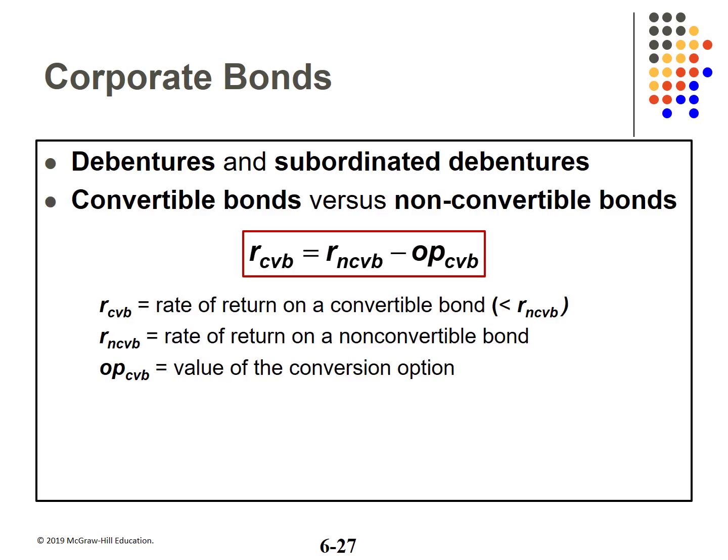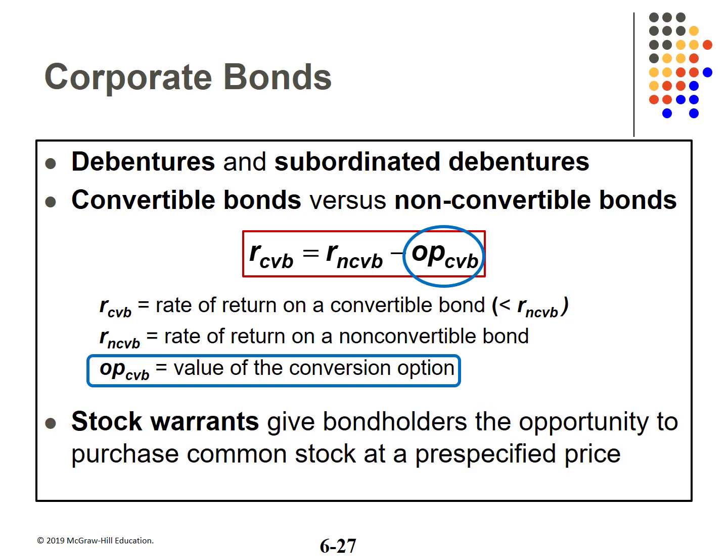Convertible bonds allow conversion to stock at the option of the bondholder, combining the best of stock and bonds. If the stock is performing well, convert; if not, stick with the bond for the assured interest payments. Investors are willing to accept a lower coupon rate in return for the conversion option. Warrants are basically options to buy shares of the issuing company's stock at a specified price. They are often combined with a bond issue as a sweetener but can be detached and sold separately.